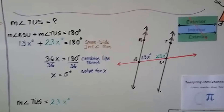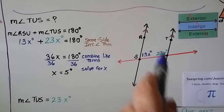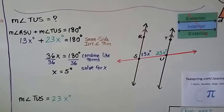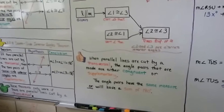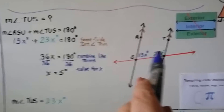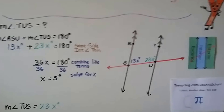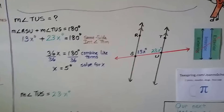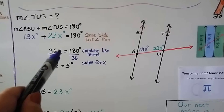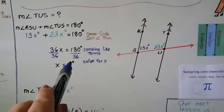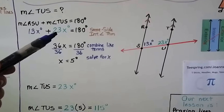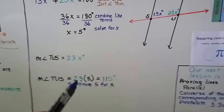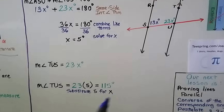Now, the measure of angle TUS — that's where 23X degrees is — and the other angle is 13X degrees. By the same side interior angles theorem, they're supplementary since they're on the same side of the transversal in the interior. So we have 13X plus 23X equals 180 degrees. Combining like terms gives 36X equals 180 degrees. Dividing both sides by 36, X equals 5. Substituting into 23X gives 23 times 5, so the measure of angle TUS is 115 degrees.